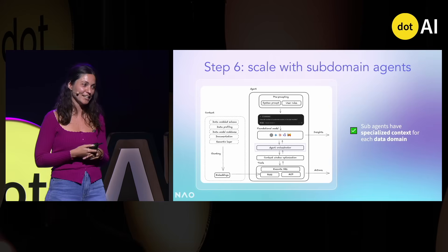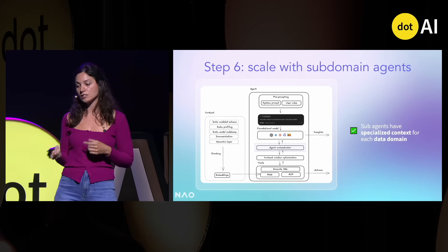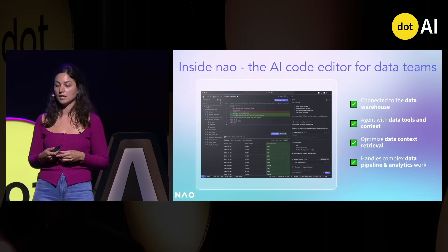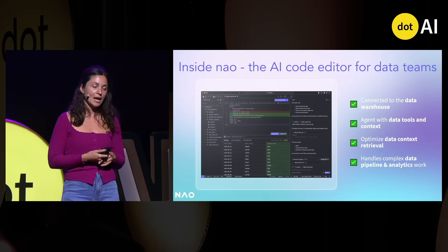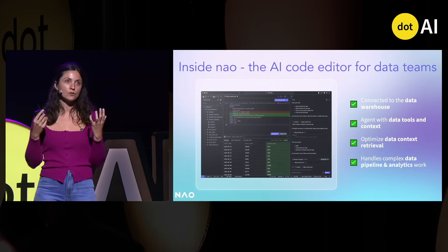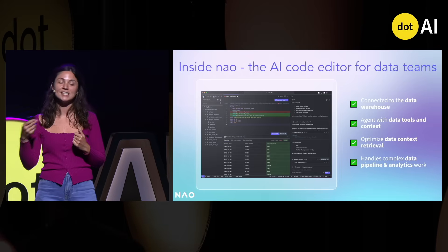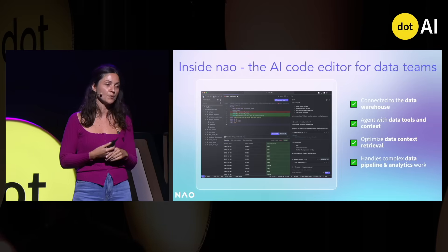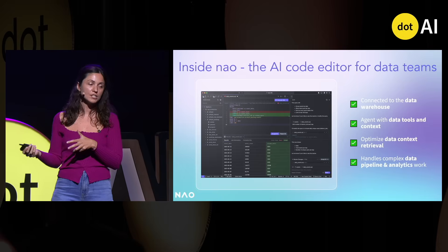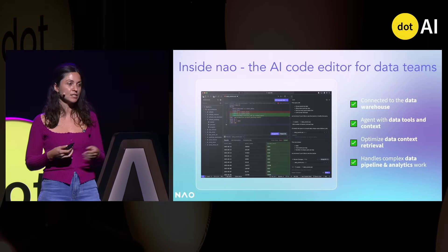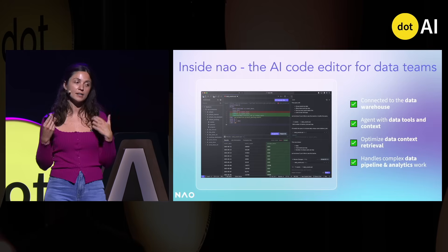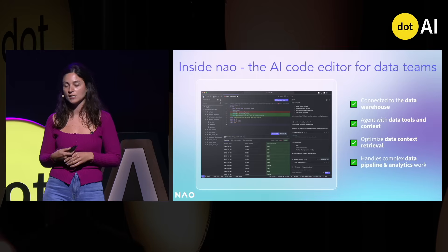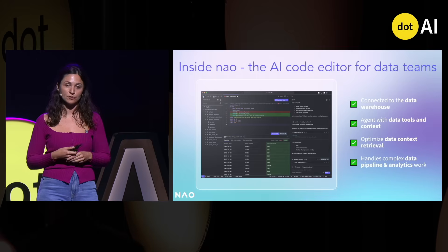Why am I talking about this here today? It's because this is the system we have built in Now. Now is an AI code editor for data people — it's really meant to read the data context that data people work with. It's a fork of VS Code, directly connected to the data warehouse, so it has access to your data schema and can write data pipelines and analysis just from the context of your data warehouse.